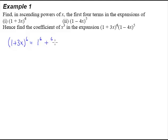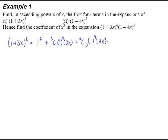The next thing will be 6C1, and of course 1 will reduce power by 1, so now 1 will be raised to the power of 5, and 3x will gain 1 power. This is the second term and this is the third term. The third term will be 1 raised to the power of 4 and 3x raised to the power of 2. And 6C3, which is 1 raised to the power of 3 and 3x raised to the power of 3.